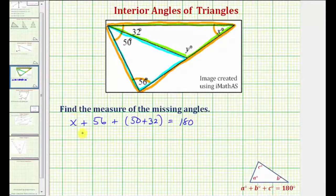So solving for x, we'd have x plus 56, plus 50 plus 32 is equal to 82, equals 180. Combining like terms, we have x plus 56 plus 82 is equal to 138.